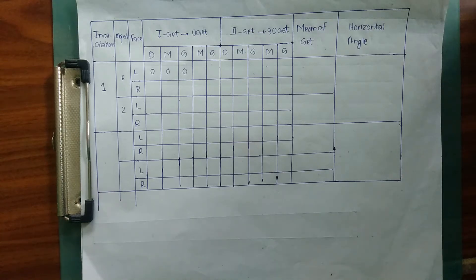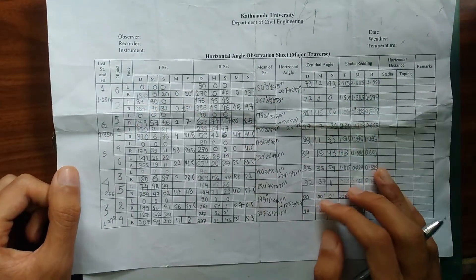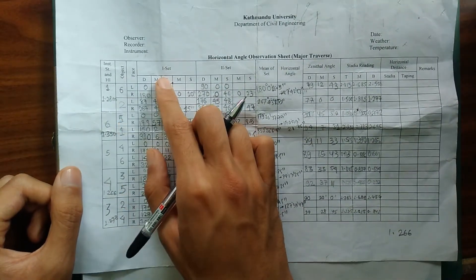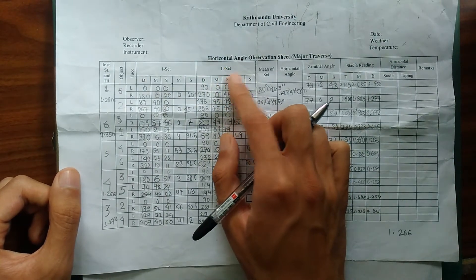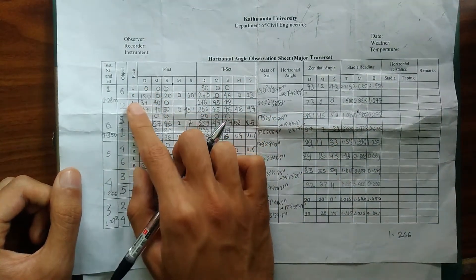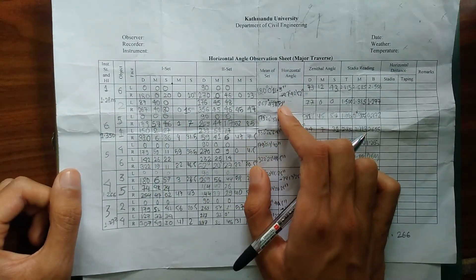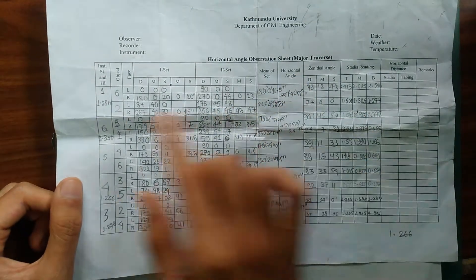Hello and welcome to our lecture video. In this lecture I am going to explain how you can apply correction to your angles which are measured using your theodolite, and how you can calculate your horizontal angles from those measured values. As you can see, this is how our data sheet looks like. We have our first instrument station, objects 6 and 2, our first set which is our 0-set, our second set which is our 90-set, face left and face right conditions, the mean offset, and from these we calculate our horizontal angle.